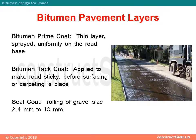Bitumen prime coat is a thin layer sprayed uniformly on the road base. Bitumen tack coat is applied to make the road sticky before surfacing or carpeting is placed. Seal coat involves rolling of gravel sized 2.4 mm to 10 mm.